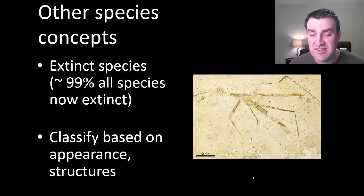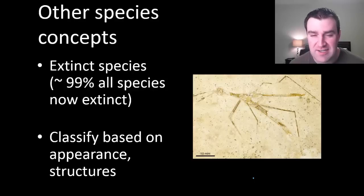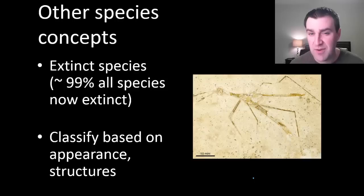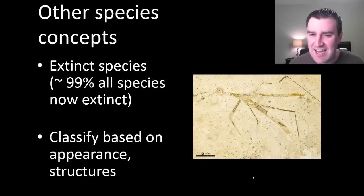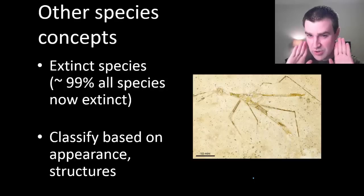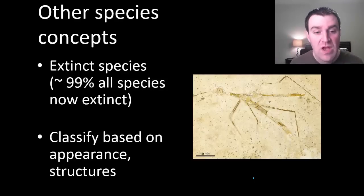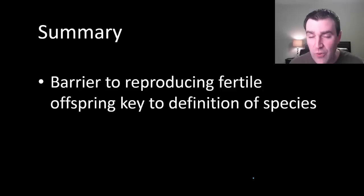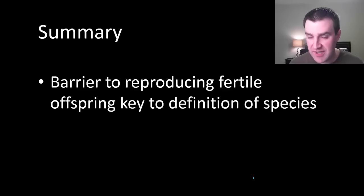We also have evidence of many groups that existed in Earth's history but no longer exist. For extinct species, we try to classify them by looking at their appearance and structures to separate them into different species. Notably, we think about 99 percent of all species that have ever existed on this planet are now extinct — many lineages existed at one point but no longer continue today. Overall, we focused on how we declare groups as different species, with successful sexual reproduction producing fertile offspring being the key criterion.